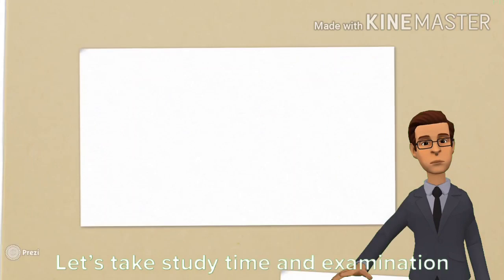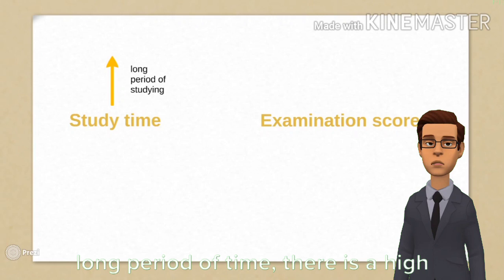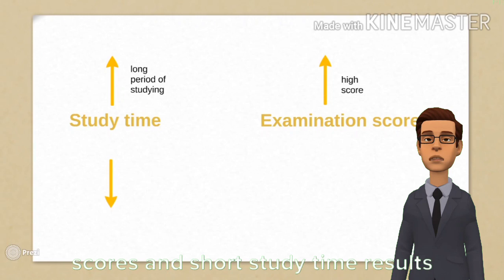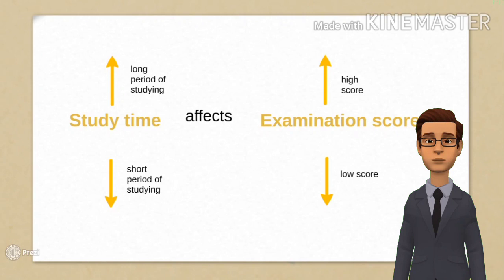Let's take study time and examination scores for example. It is a universally accepted fact that when a student studies for a long period of time, there is a high chance of getting high examination scores, and short study time results to low examination scores. Therefore, it can be concluded that study time affects the examination scores.